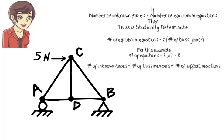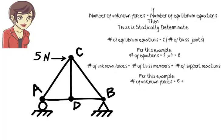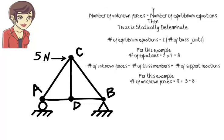Here, the truss has five members. Each member carries an axial force which needs to be determined, so there are five unknown member forces. Further, since the structure rests on a pin and a roller, there are three unknown reactions. The pin provides two reactions and the roller has one reaction. Therefore, the total number of unknowns is five plus three, or eight. Since the number of unknowns equals the number of equations, the truss is said to be statically determinate.